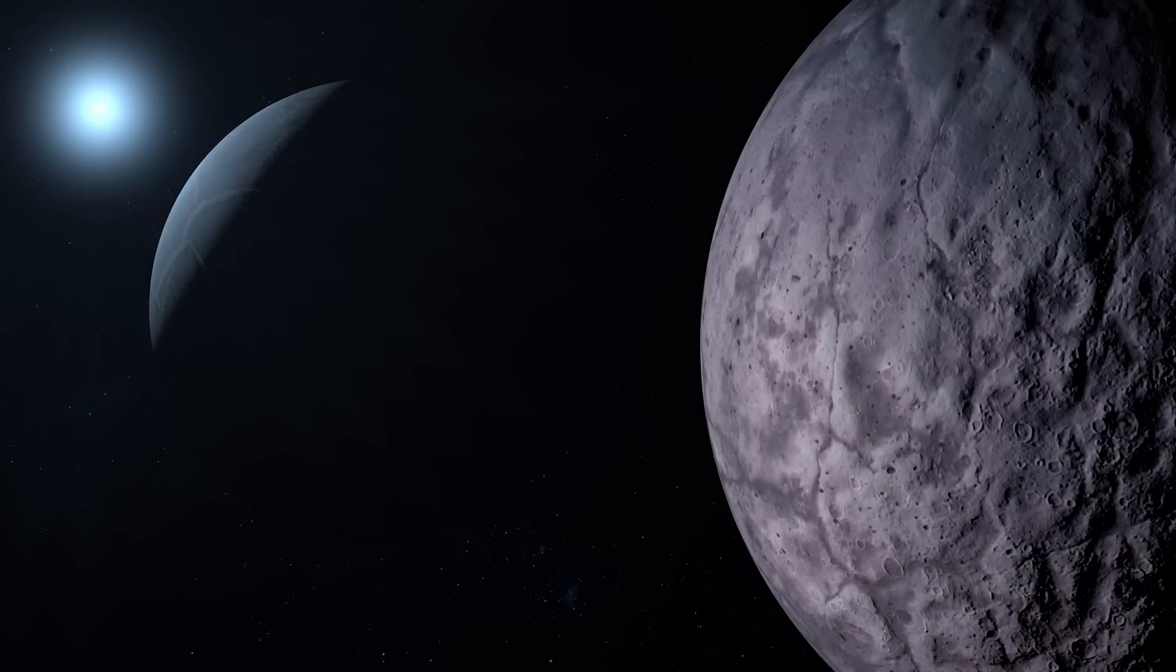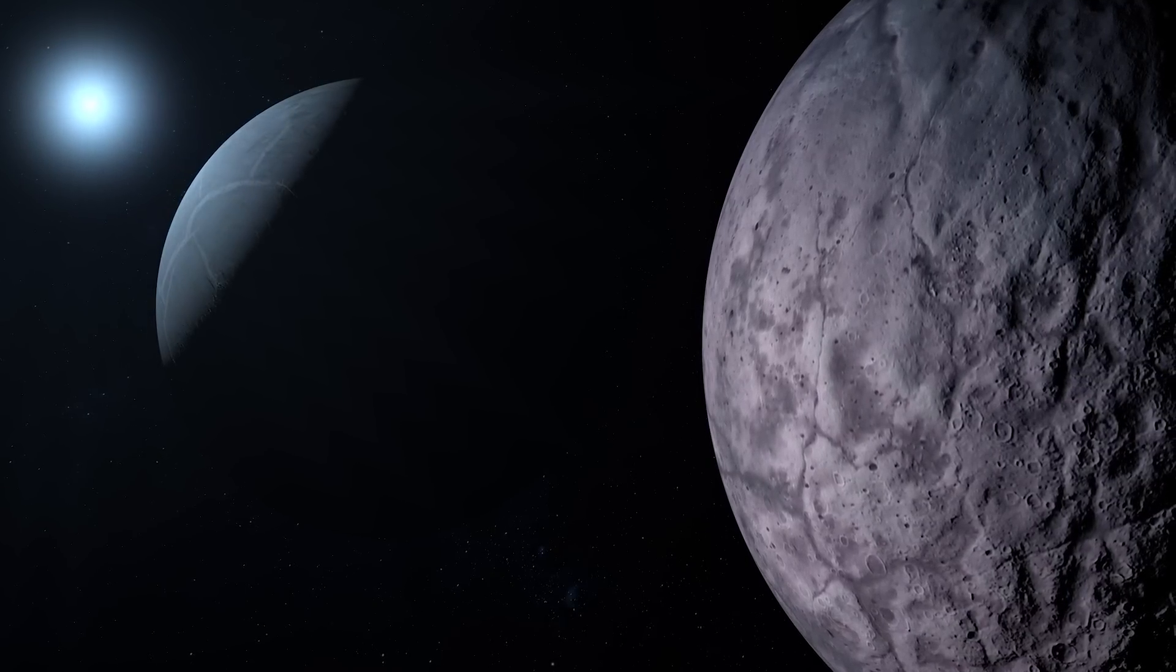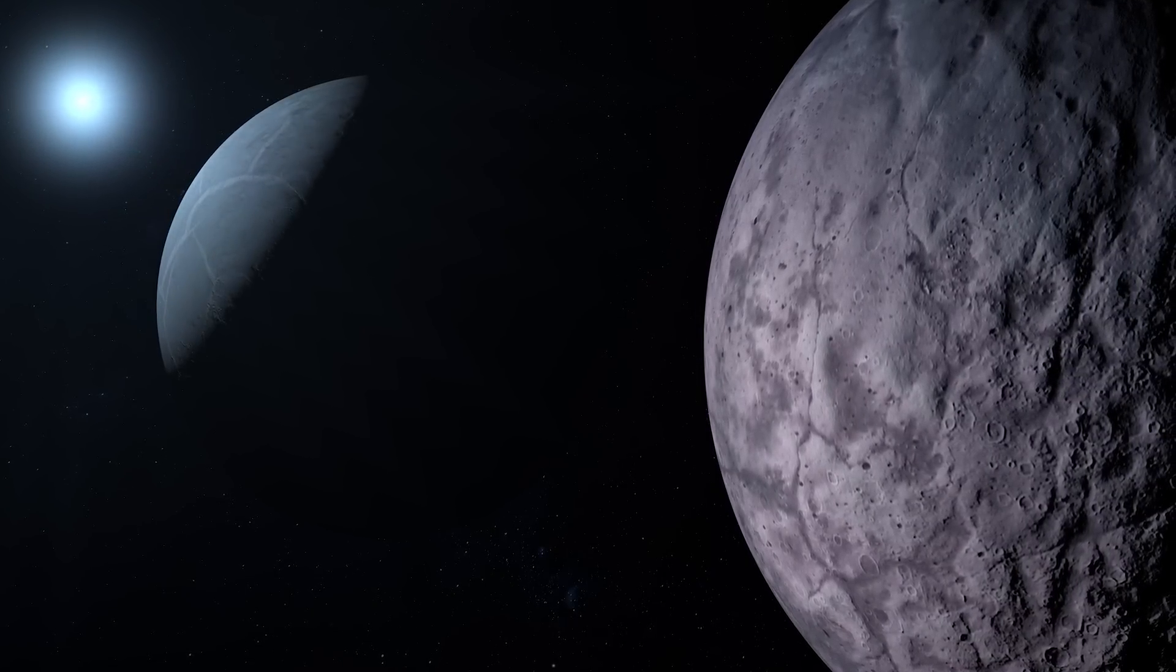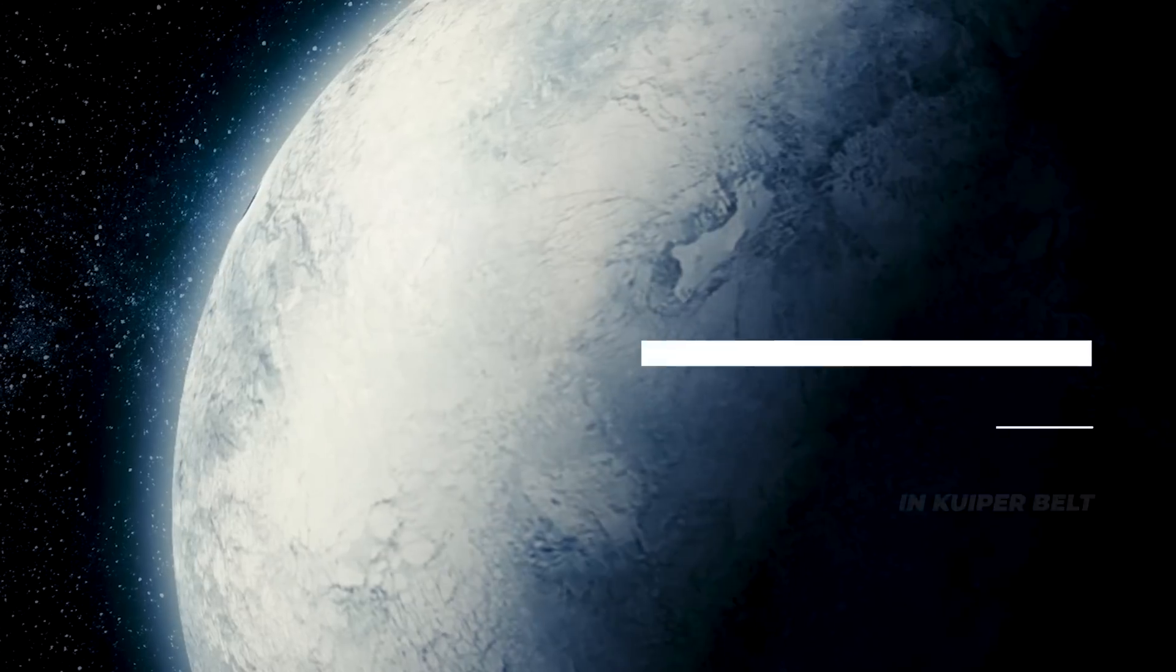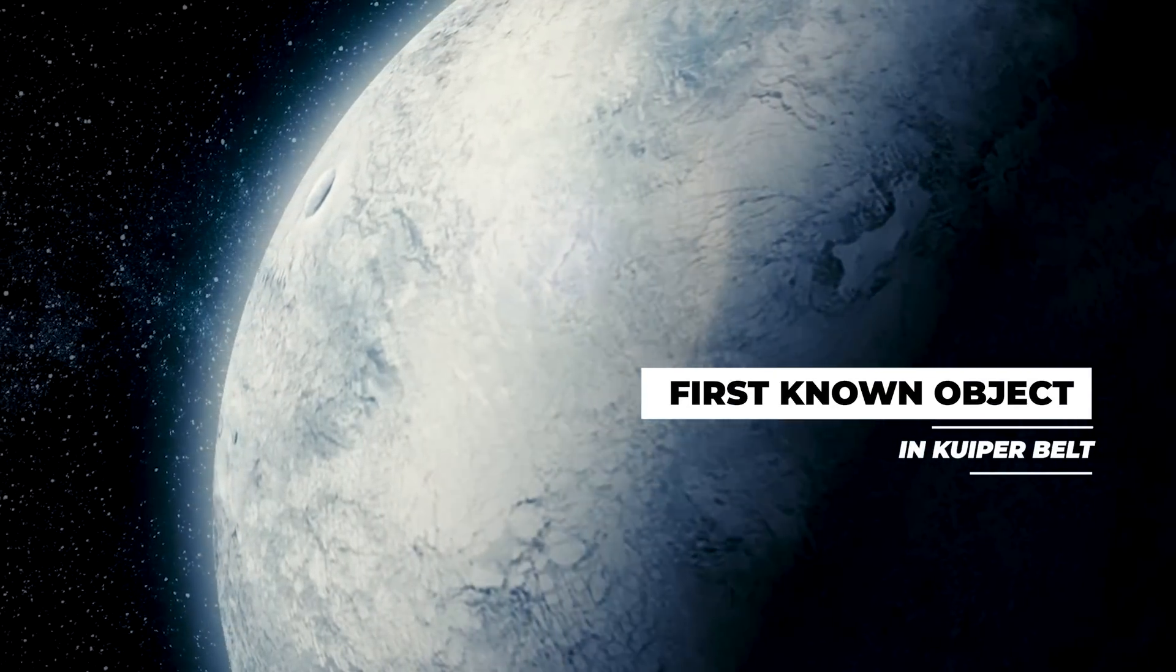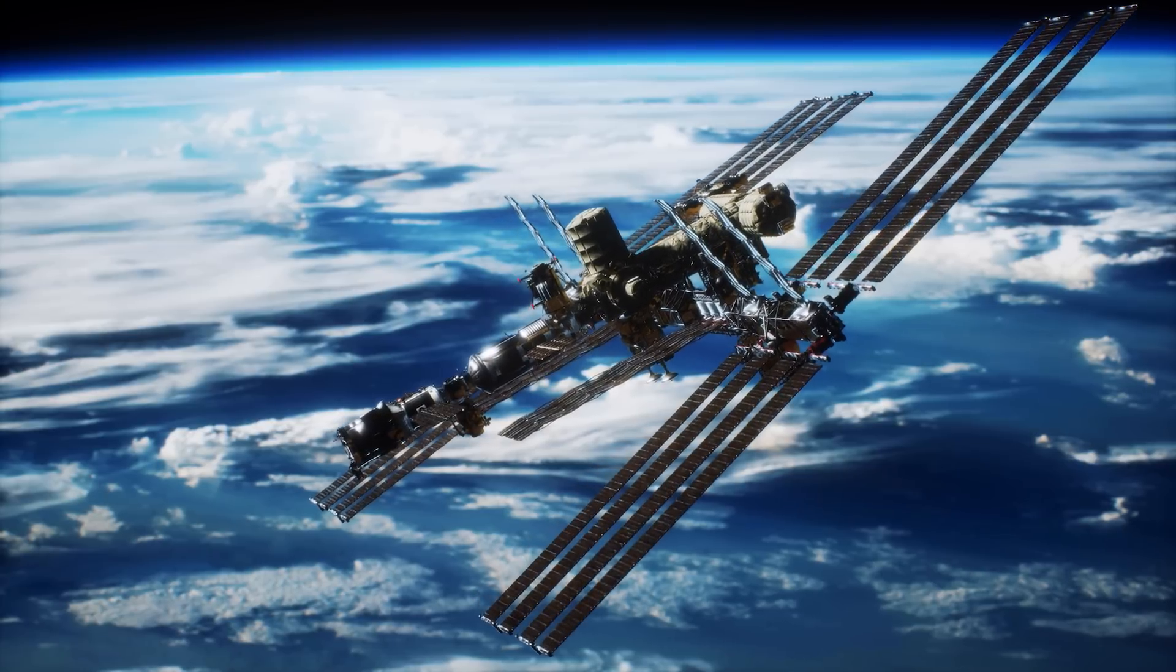The region is also home to several dwarf planets, which are small circular worlds that are too massive to be classified as asteroids but too small to be considered planets. Although Pluto was the first known object in the Kuiper Belt to be identified, astronomers did not recognize it as such until other Kuiper Belt objects were discovered.